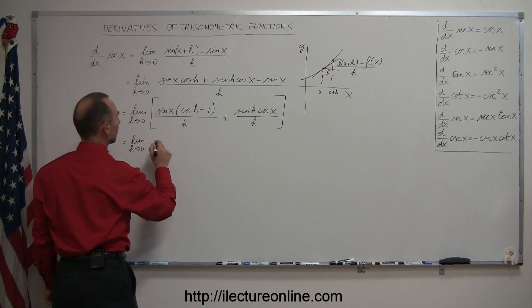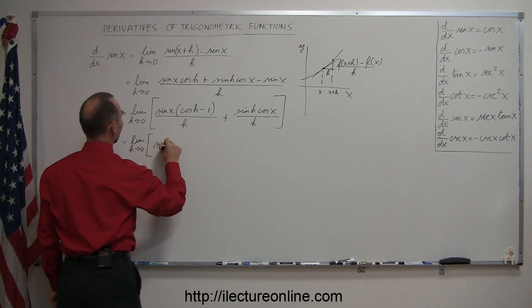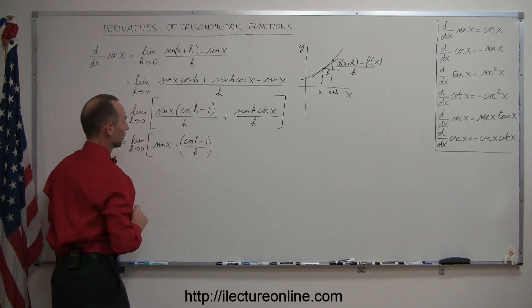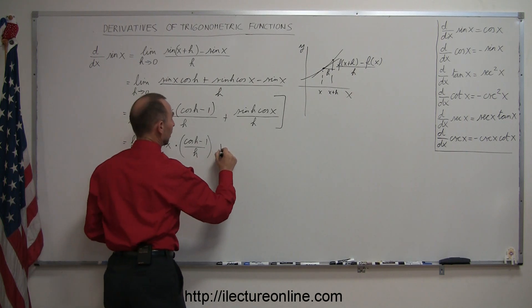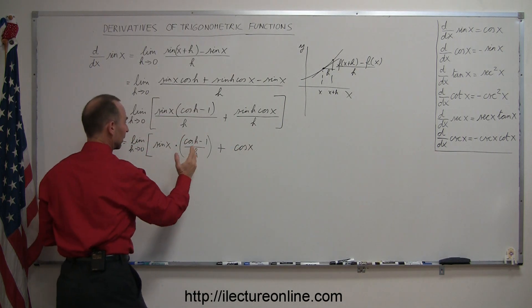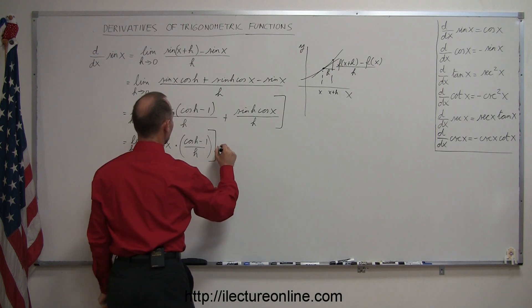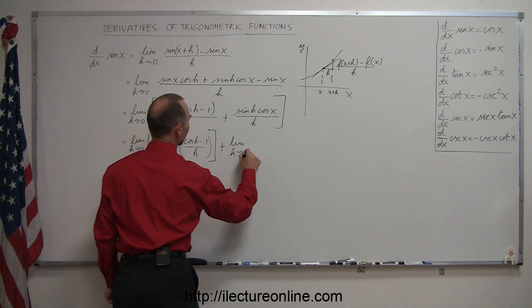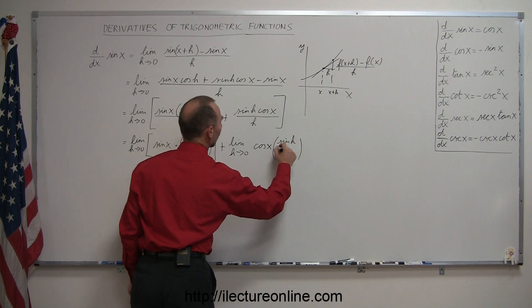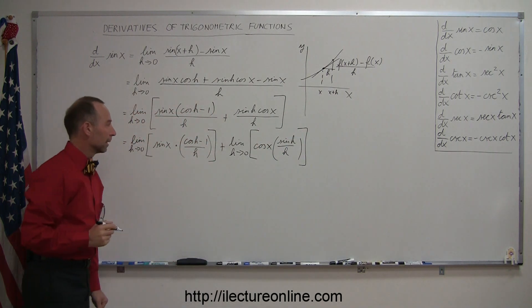I'm going to separate these two parts and write this as the limit as h goes to zero of the sine of x times the quantity cosine of h minus 1 over h, plus the limit as h goes to zero of the cosine of x times the sine of h over h. I'll put brackets around that so it looks a little cleaner.